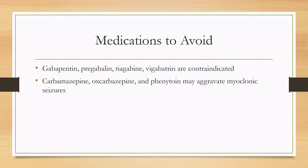There are medications that are absolutely contraindicated in JME. These include gabapentin, pregabalin, tiagabine, and vigabatrin — these medications will aggravate all seizure types in the disease. Carbamazepine, oxcarbazepine, and phenytoin may aggravate the myoclonic seizures.